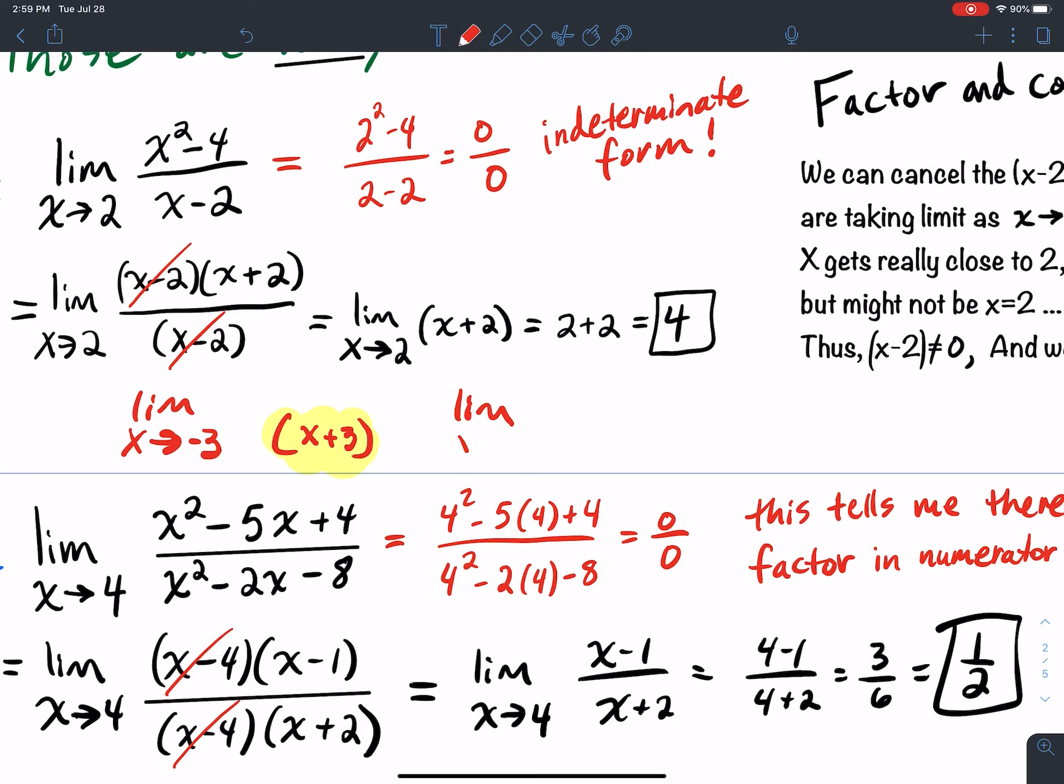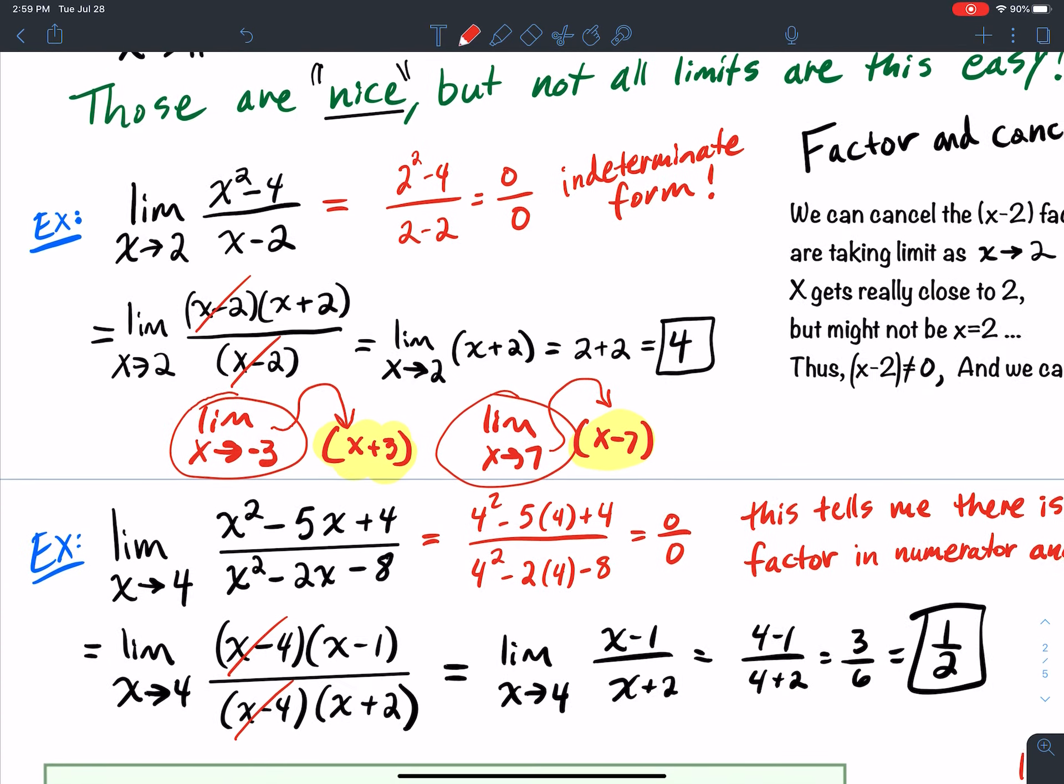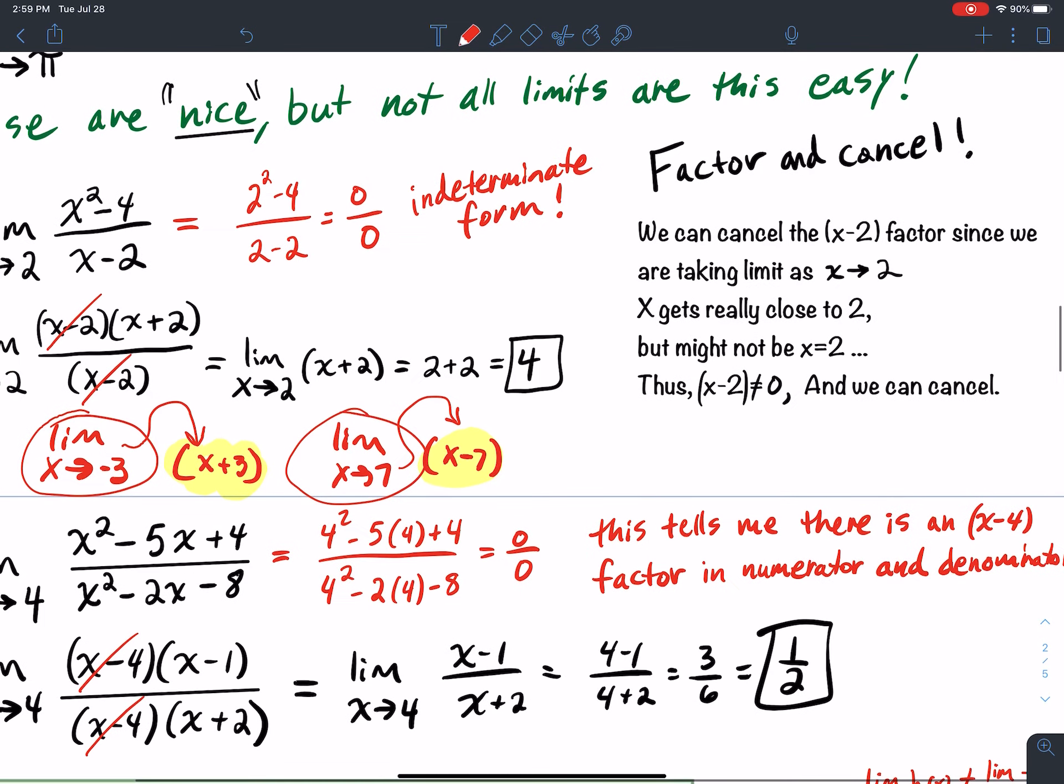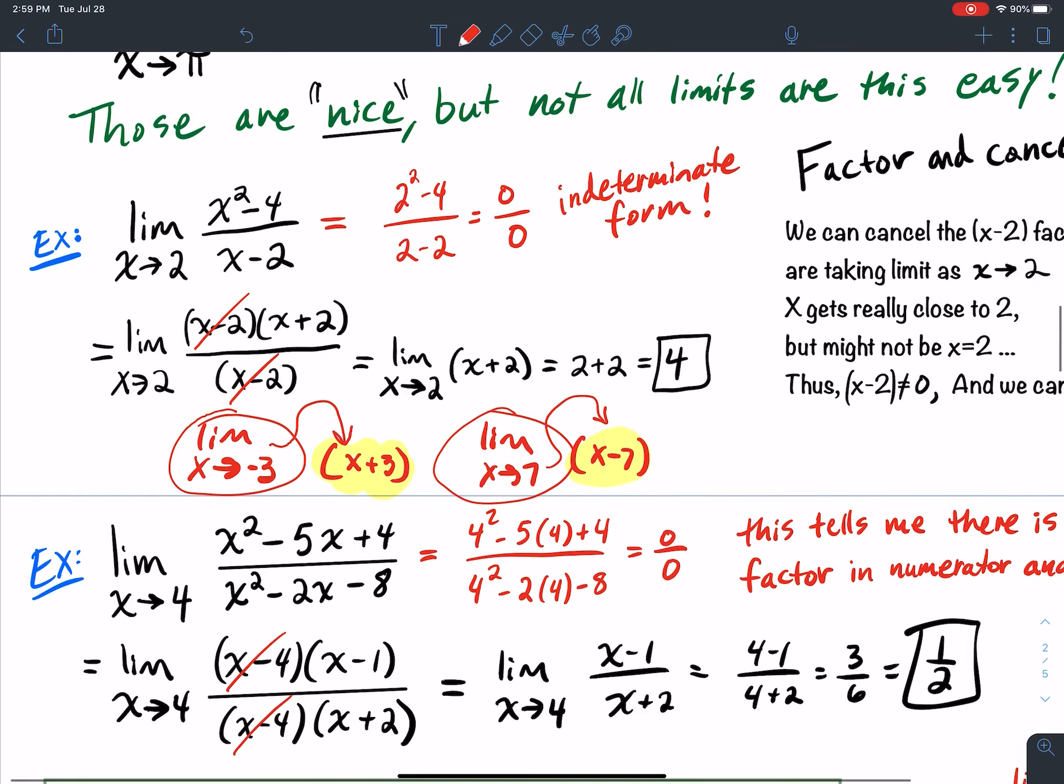If you had the limit as x goes to, I don't know, 7, then you might be looking for an x minus 7 factor. So when you factor here, be on the lookout for what you're taking the limit because the limit kind of gives you an idea of what you should be looking for. So, you know, maybe that's a good test question that might pop up or something. Who knows? But anyway, good luck going through these problems.